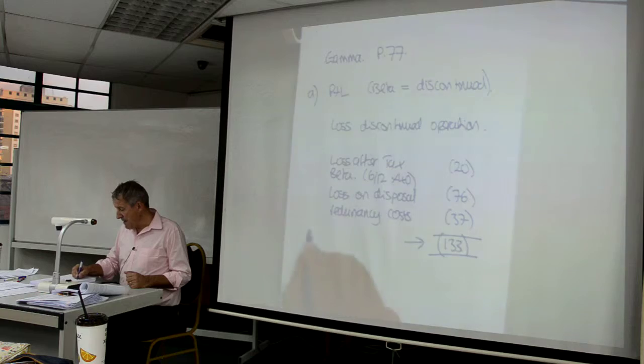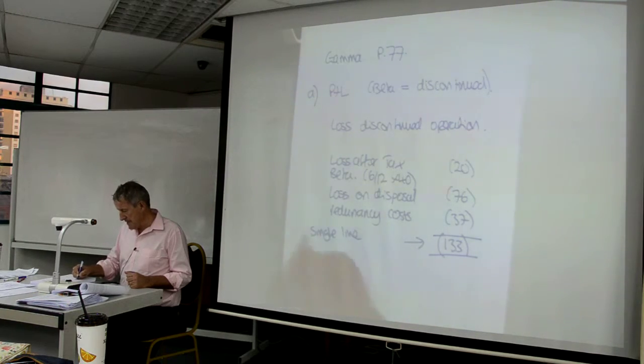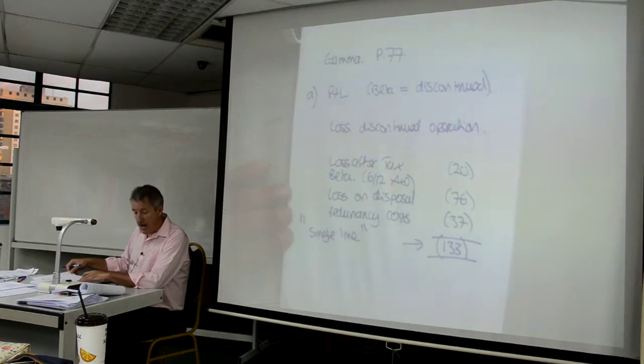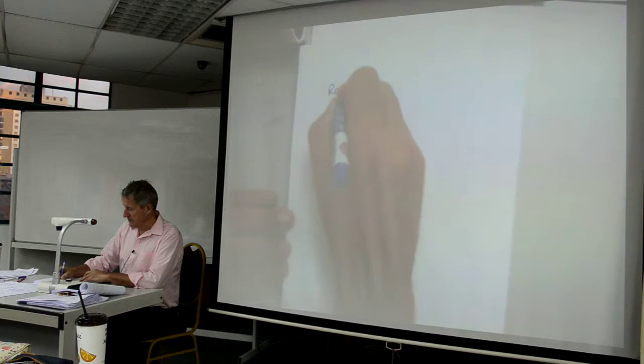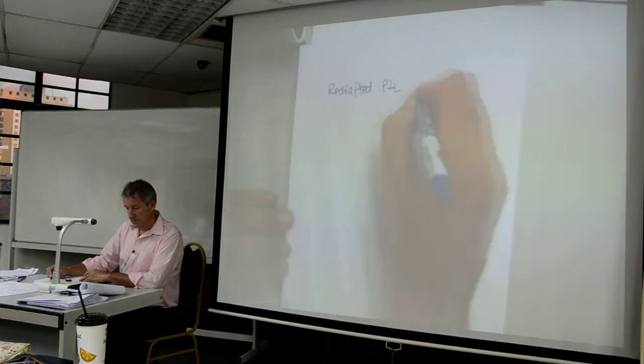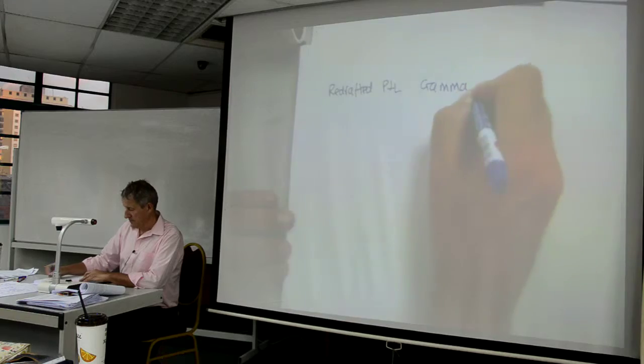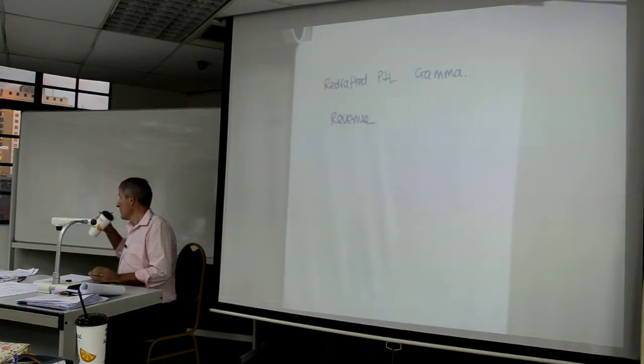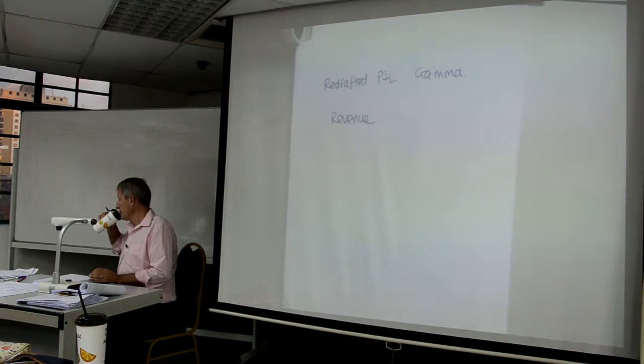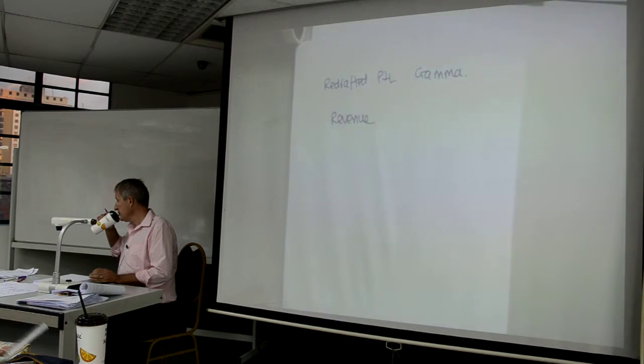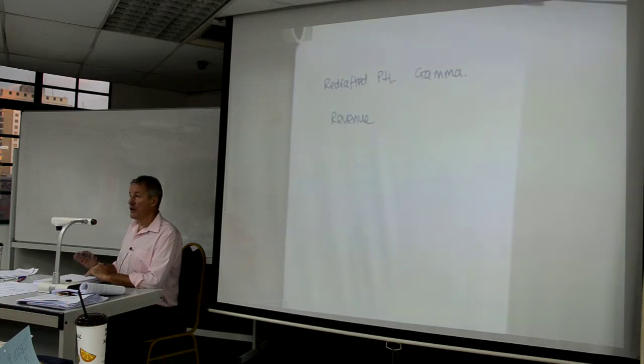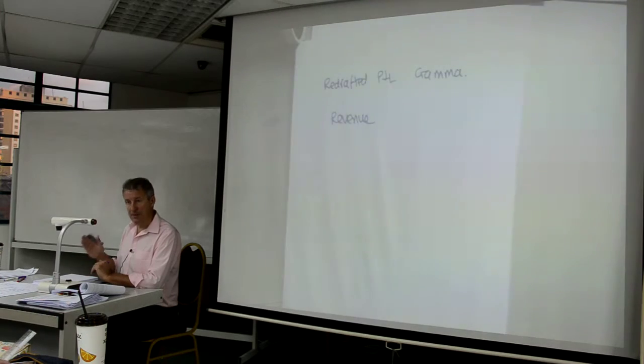So my overall loss from a discontinued operation is 133. This is going to be my single line. So I'm now going to present that information in a revised profit and loss account. I am ignoring Beta.